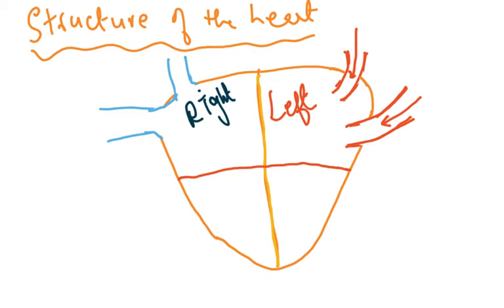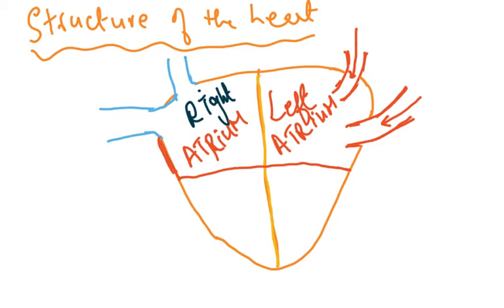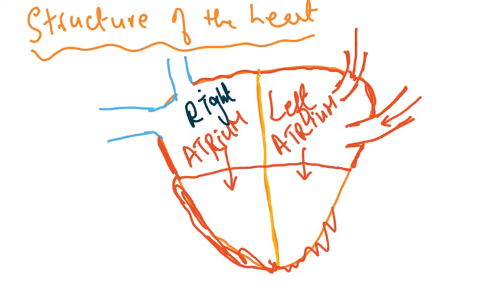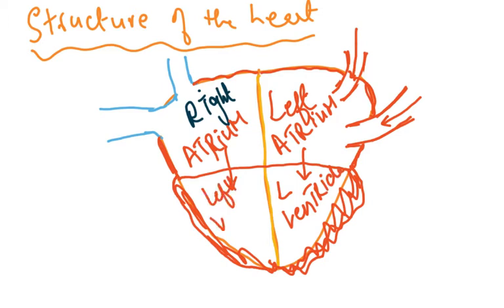The heart is divided into four chambers. The upper ones are called the atria — so this is the right atrium and this is the left atrium. The upper chambers are smaller and thin-walled, and their function is just to pump blood into the ventricle. The lower part has a very thick wall, and the left side is even thicker. So this is the left ventricle — please get the spelling right.